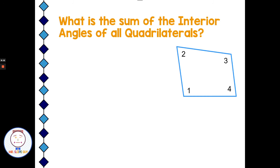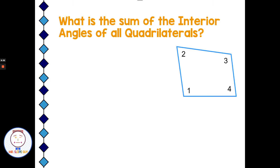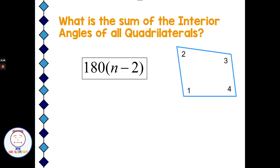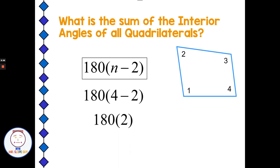Now we have a quadrilateral — a four-sided figure — but it is not regular. Notice how all the sides and all the angles are not equal to each other. We're asked for the sum of the interior angles. The sum of the interior angles for this quadrilateral will be the same for all quadrilaterals: all squares, all rectangles, all trapezoids — all four-sided figures will have the same total measure for interior angles.